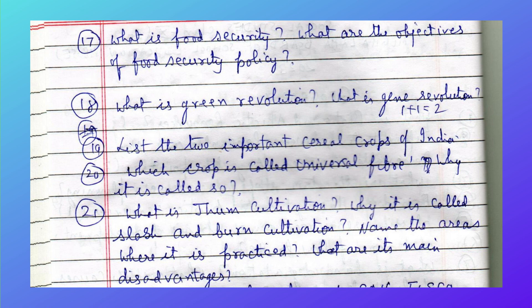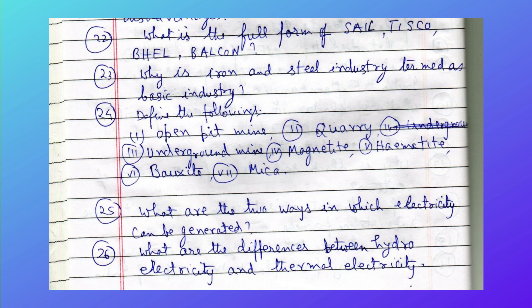What are the main disadvantages of Jhum cultivation? What is the full form of SAIL, TISCO, RAIL, and BALCO? Why is the iron and steel industry termed the basic industry? Define the following: open-pit mine, underground mine, magnetite, hematite, bauxite, and mica.